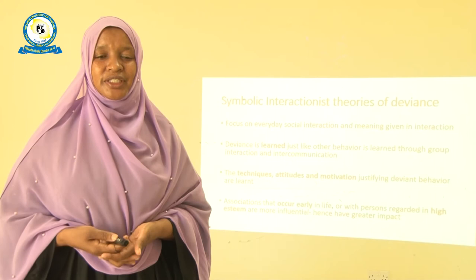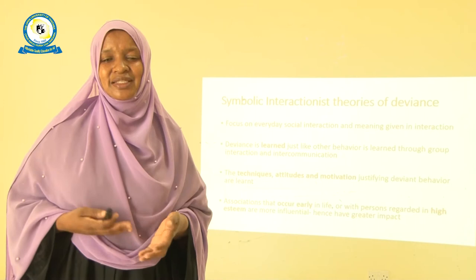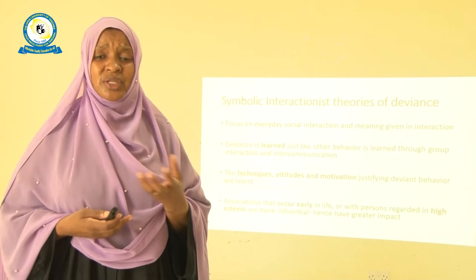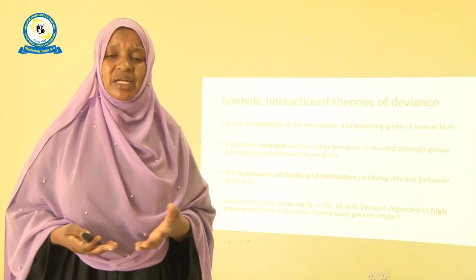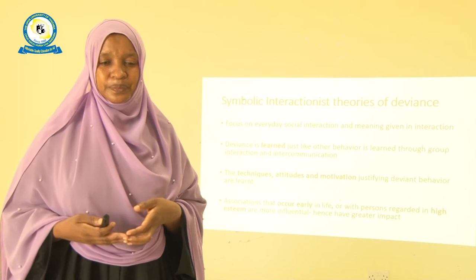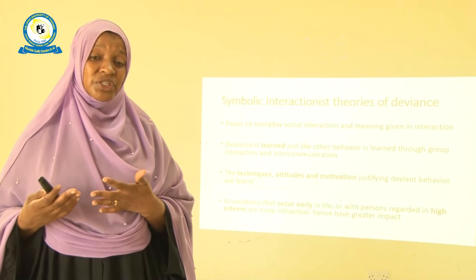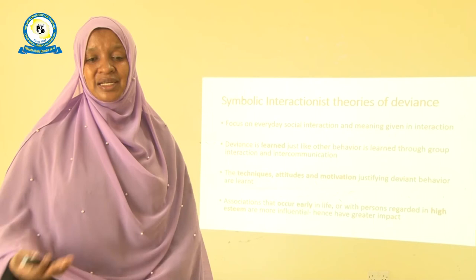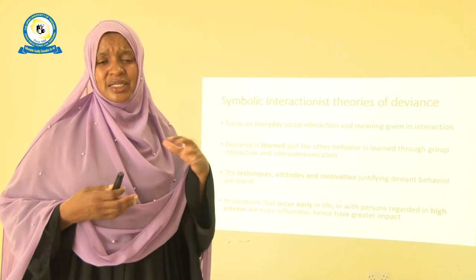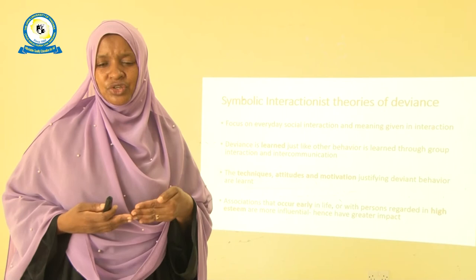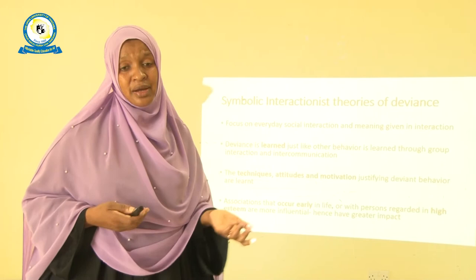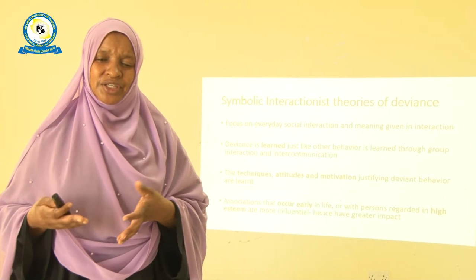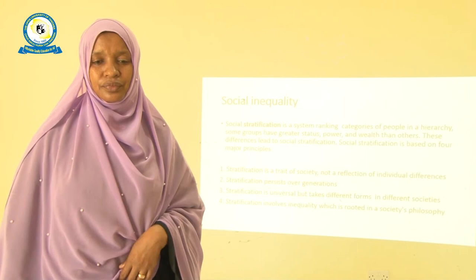The symbolic interactionists view deviance as something that occurs every day, in everyday society when people interact with each other and give meaning to their interaction. They say deviance is learned — just like any other behavior — through group interaction and intercommunication. The techniques, attitudes, and motivation justifying deviant behavior are also learned. If this learning and association occurs early in life or with people held in high esteem, the influence and impact of deviance tends to be higher compared to when contact occurs at a much later stage in life.